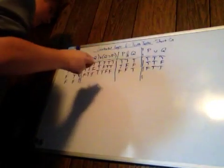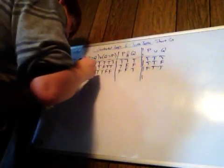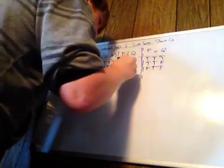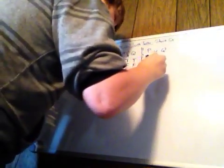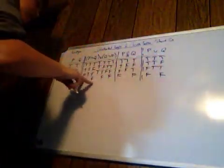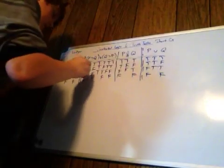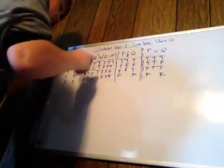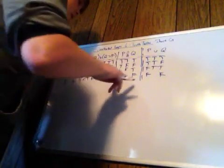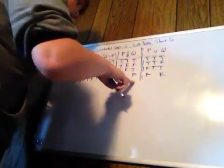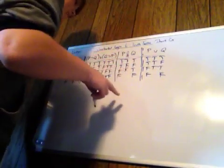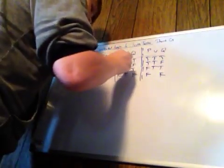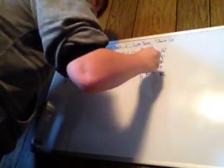Now they're both F: F, F, F, F, F, F, F, F, F. F and F in a horseshoe makes T; F and F in a horseshoe makes T; T and T in a wedge makes T; F and F in an ampersand makes F; F and F in a wedge makes F.